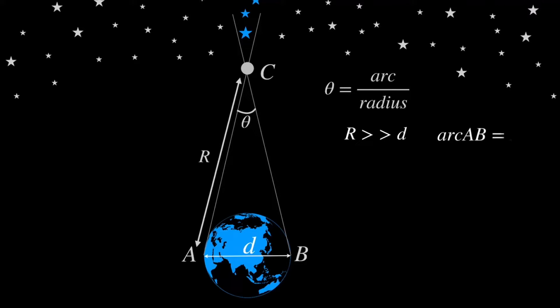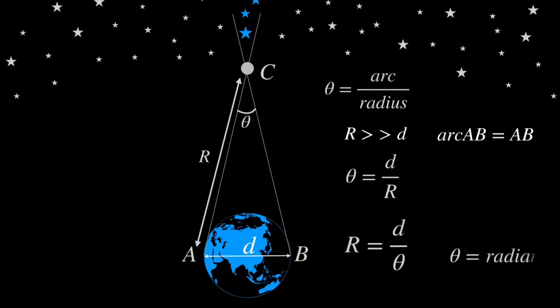We know that theta in radians can be expressed as arc divided by radius. In our case, theta is the parallax angle, the arc is arc AB, and the radius is AC — the distance between the earth and planet. By rearranging this formula, the distance of the planet from earth equals the parallax basis divided by the parallax angle in radians. To find the distance of the planet, we must know the parallax basis D and angle theta. We know the distance between two observation locations, which equals the diameter of the earth.